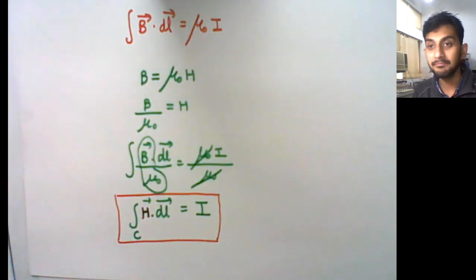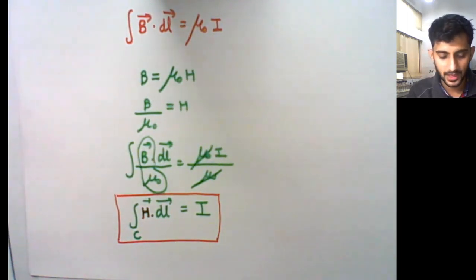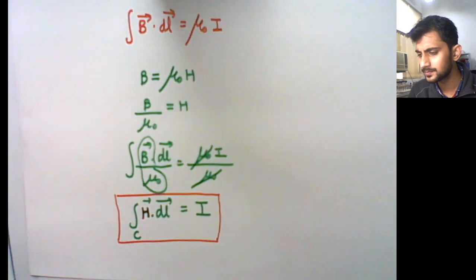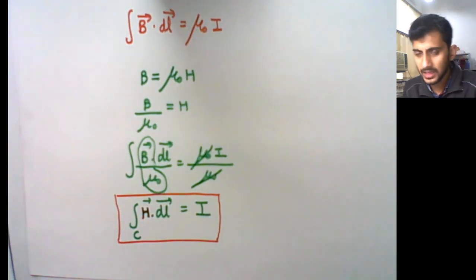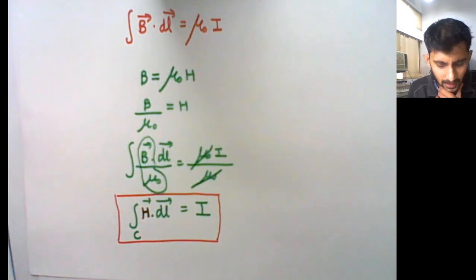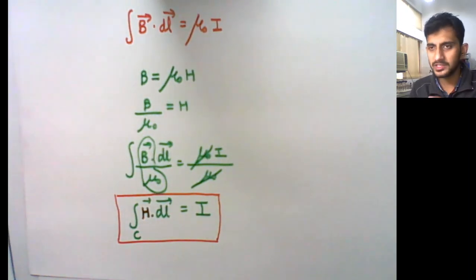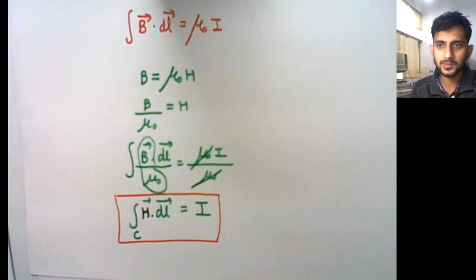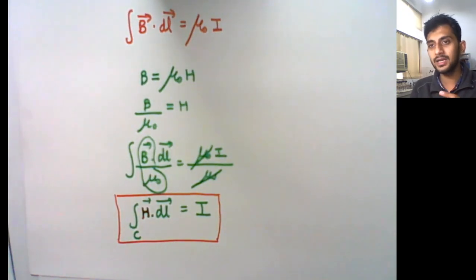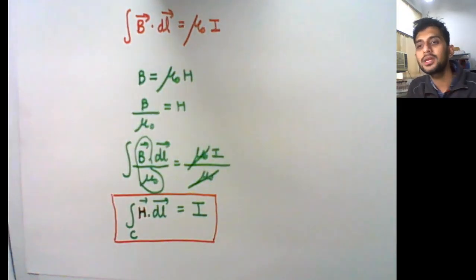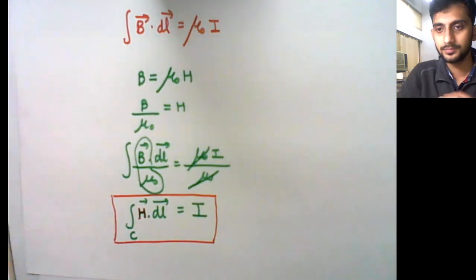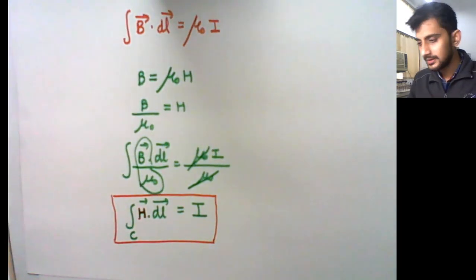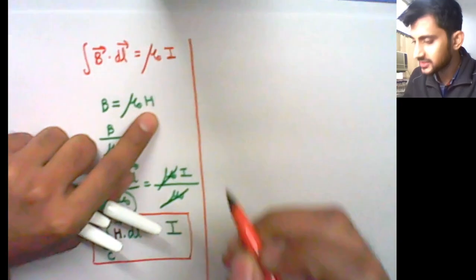This is Ampere's law. Now there is another concept: why Ampere's law as stated is incomplete. We will first study displacement current, and after that we will see how Maxwell made a modification to Ampere's law — and why that modification was needed. So now we will learn and study what is called displacement current.